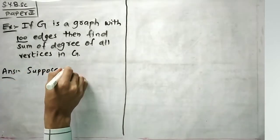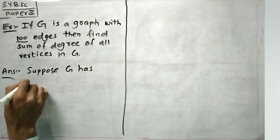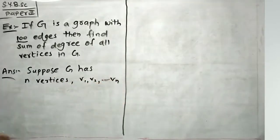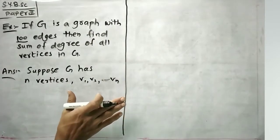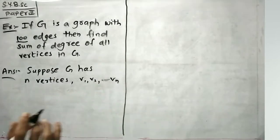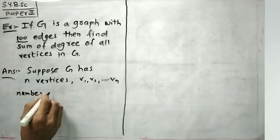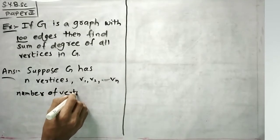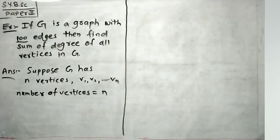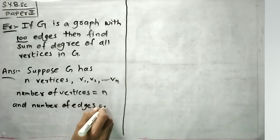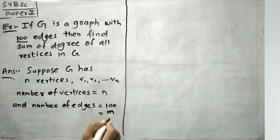Suppose G has n vertices: v1, v2, up to vn. When we have n vertices, then number of vertices equals n. And number of edges we denote by m. Then number of edges is hundred, and we denote edges by m.